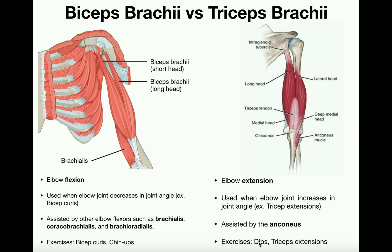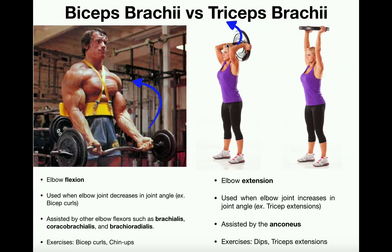Notable exercises for working the triceps brachii include dips — where pushing yourself up at a dip station involves elbow extension — and tricep extensions. Any motion where you're forcibly extending the elbow works the triceps brachii. Here's an example of a tricep extension: this woman starts with her elbows bent to about 90 degrees and lifts the weight up so her elbows are now closer to 180 degrees, and that motion is facilitated by the triceps brachii.